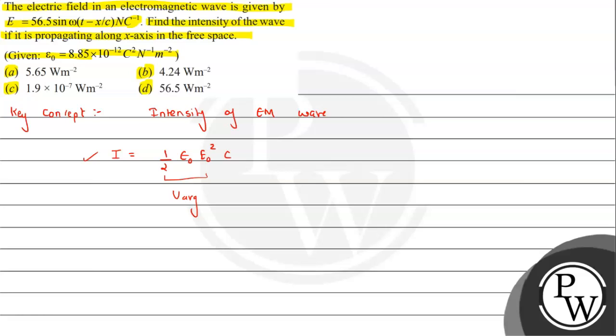Now we need to understand this result. Also we need to have an idea that the electric field equation is E = E₀ sin(ωt - kx). That we have already studied.